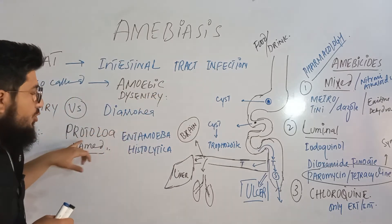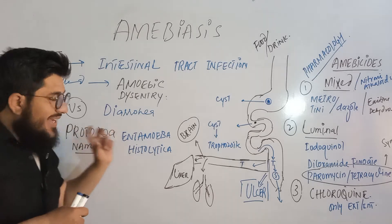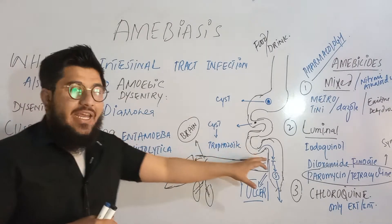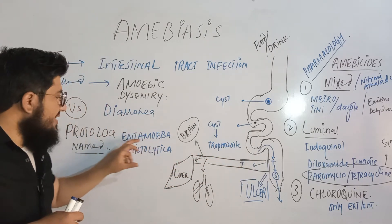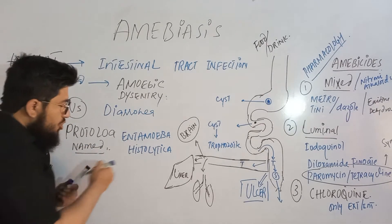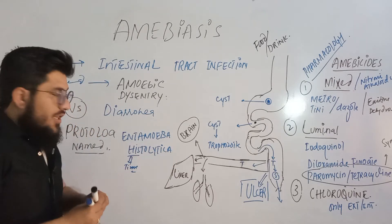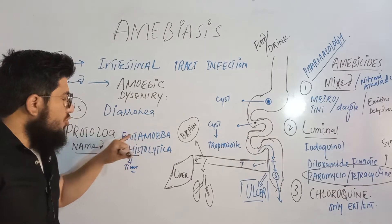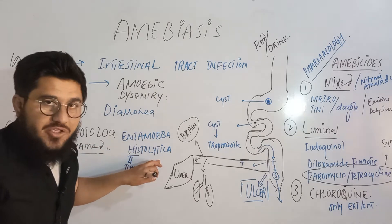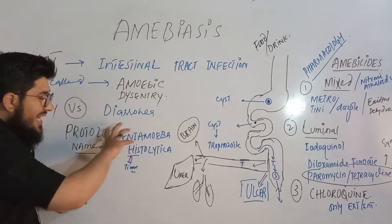This protozoal dysentery, called amoebiasis, is caused by Entamoeba histolytica. The name itself gives clues: 'Ent-' comes from 'intestine,' 'amoeba' refers to the protozoan infecting the intestine, 'histo-' means tissues, and '-lytica' means lysis. So the name tells us this amoeba infects the intestine and causes tissue damage.